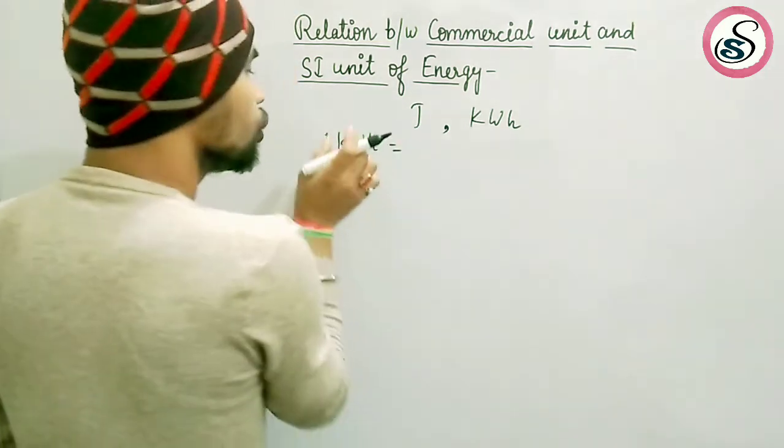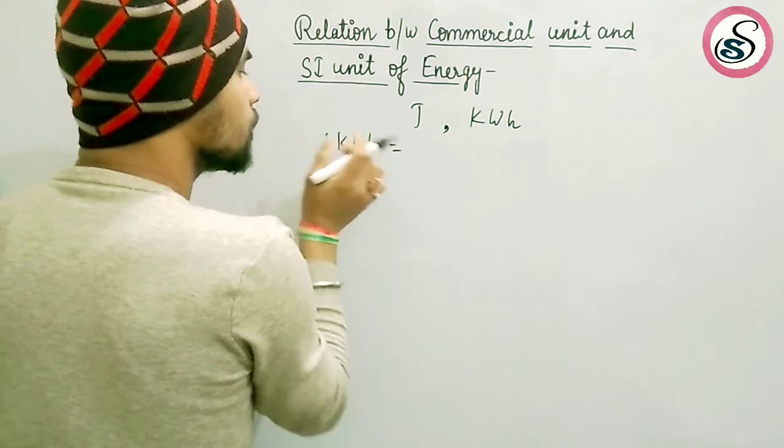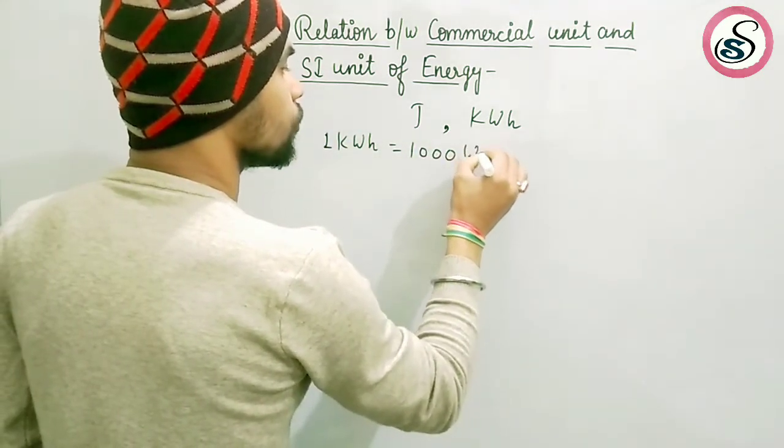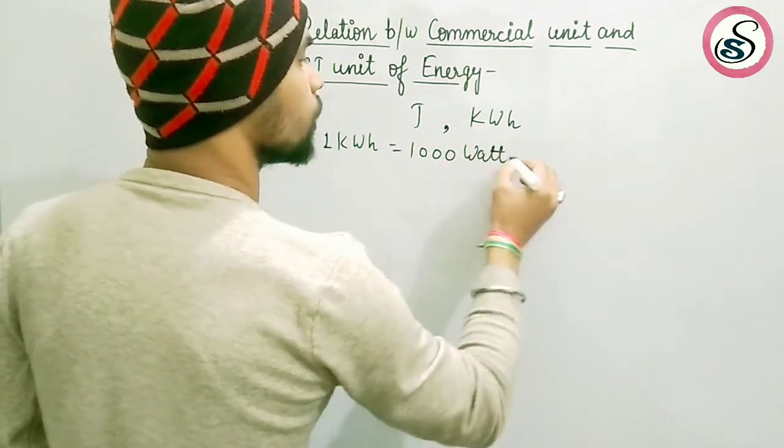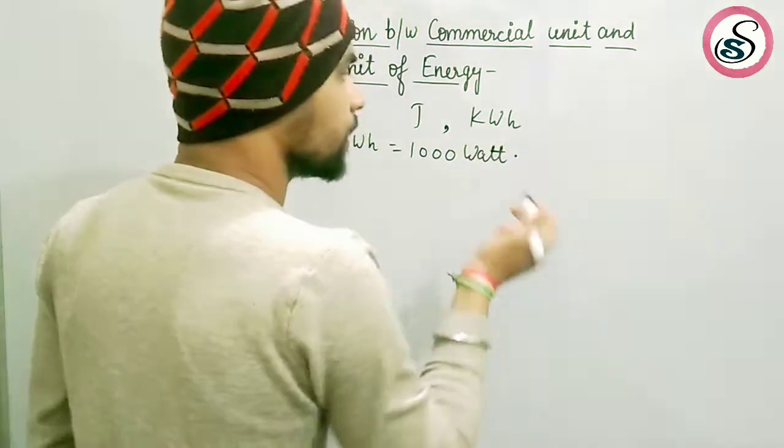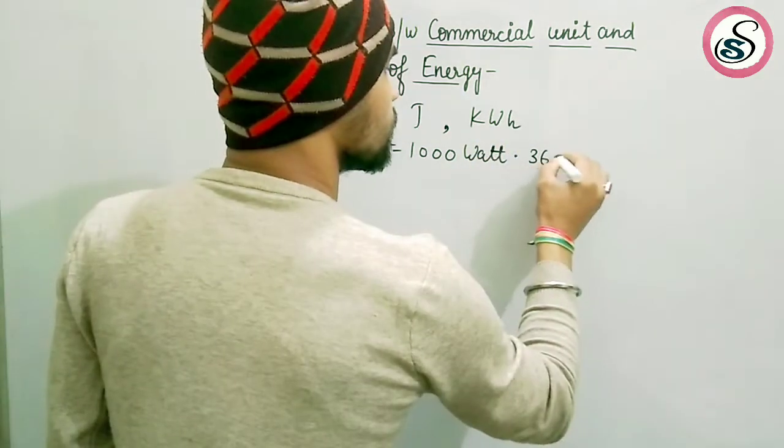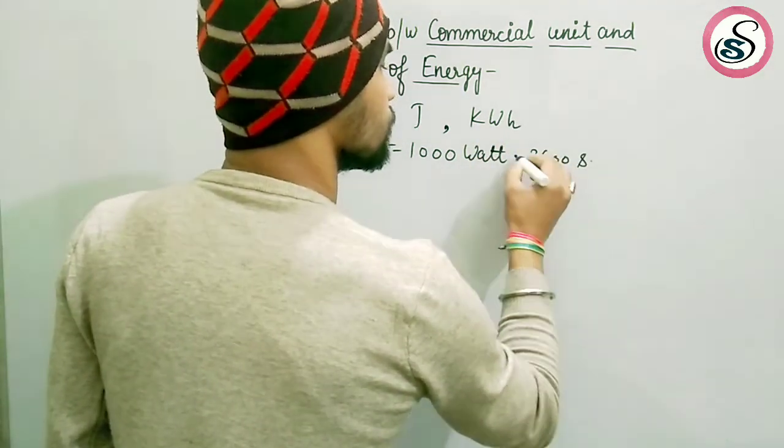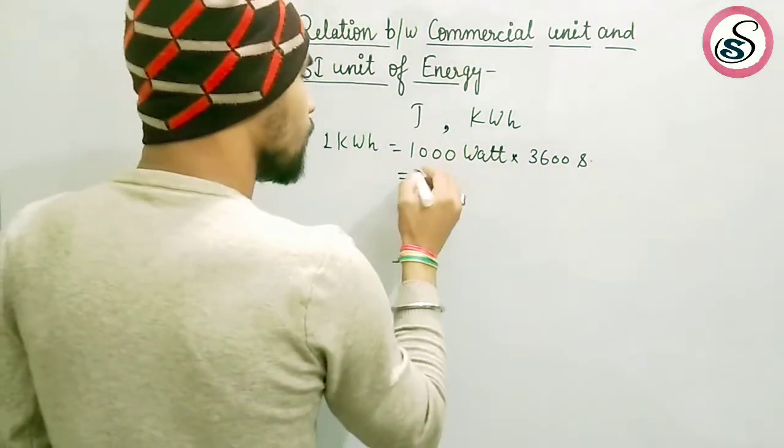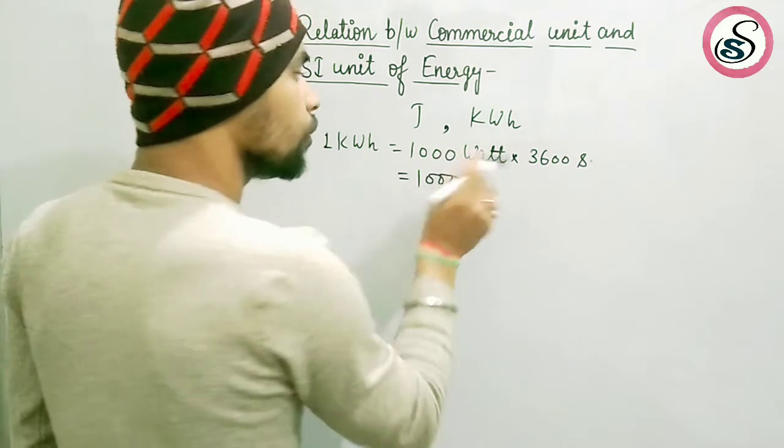is equal to what? You can write here: one kilowatt equals one thousand watt. One thousand watt, and you can write here one hour in seconds, that is 3600 seconds. Clear? So one thousand watt...